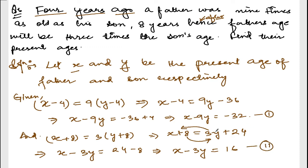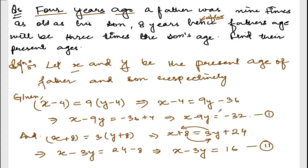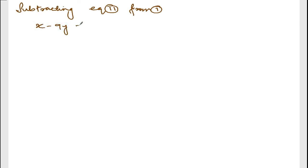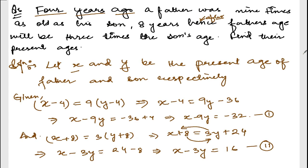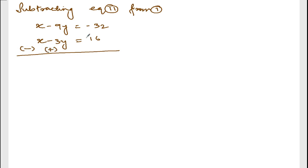Equation number 1: X minus 9Y equals minus 32. Equation number 2: X minus 3Y equals 16. Subtracting equation 2 from equation 1: the X terms cancel, minus 9Y plus 3Y gives minus 6Y, and minus 32 minus 16 gives minus 48.